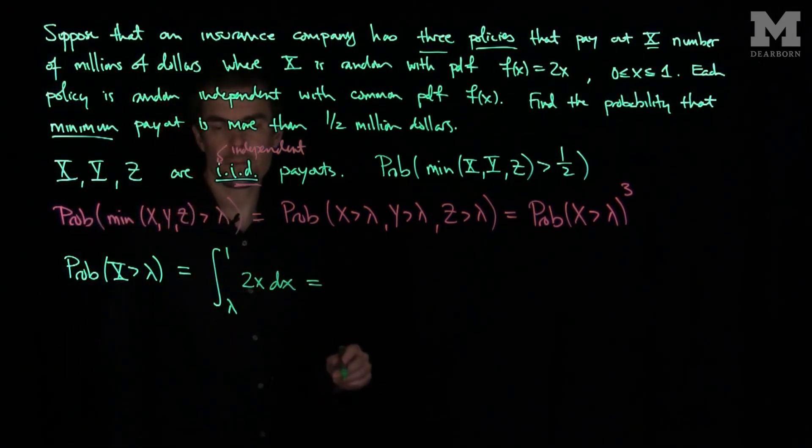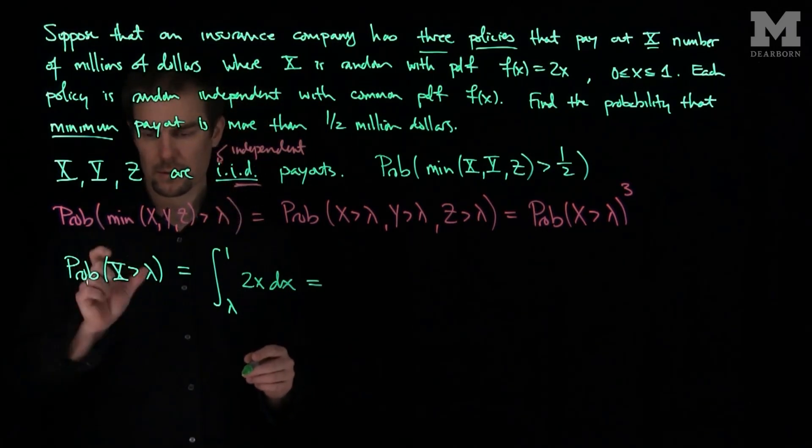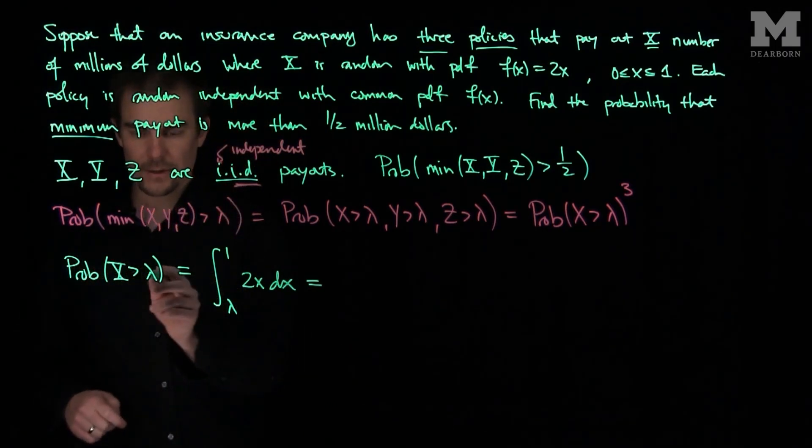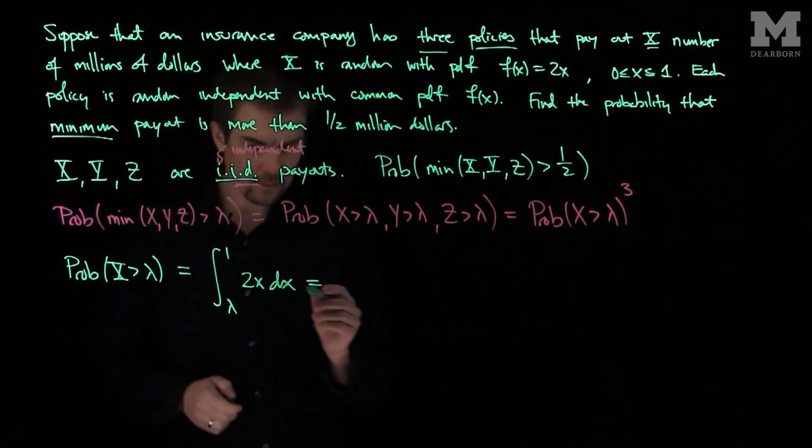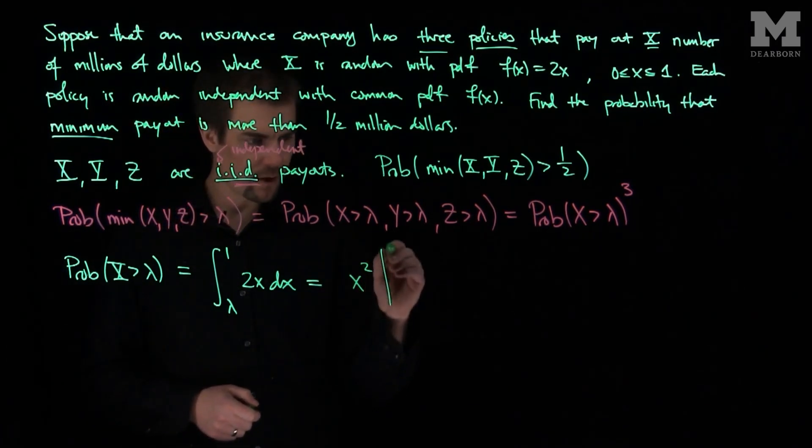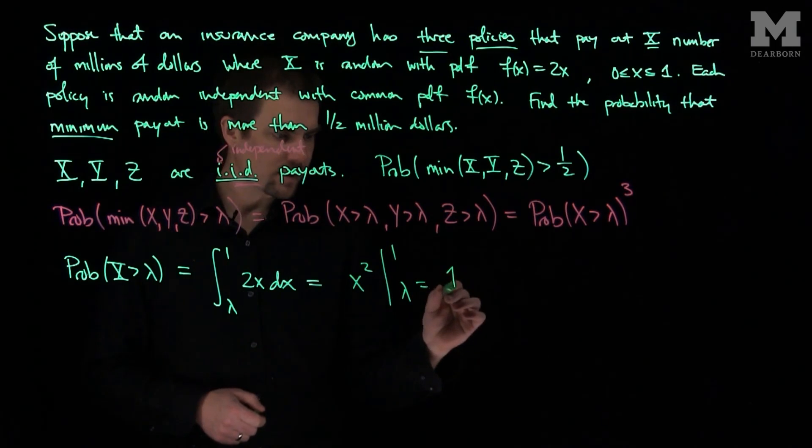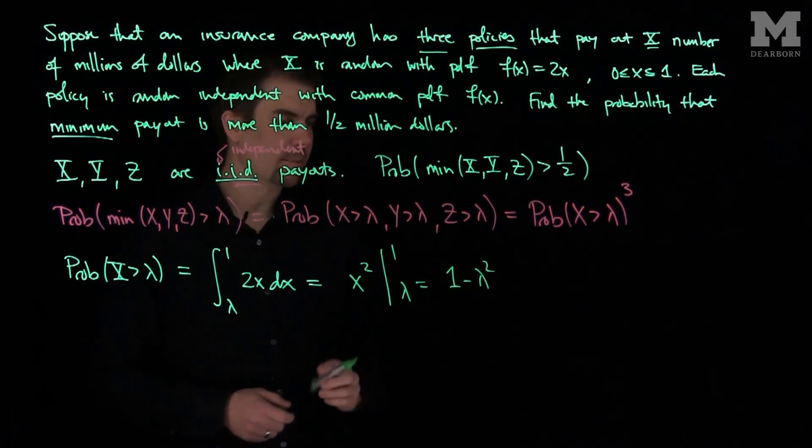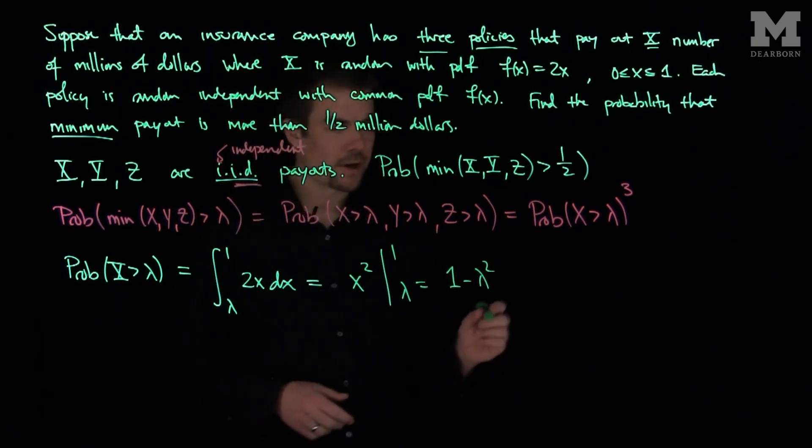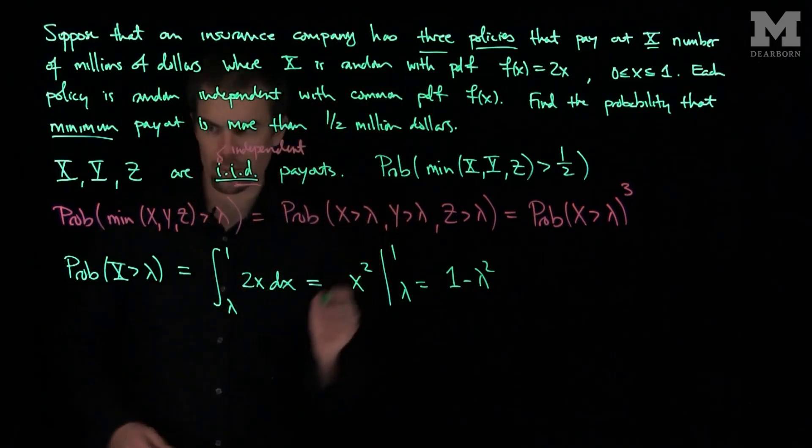Because X goes between 0 and 1, this will become x squared from 1 to lambda. So this is 1 minus lambda squared. So what we have over here is we can plug this survival into our problem.